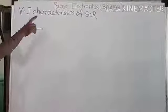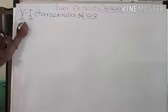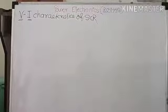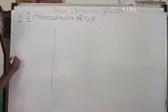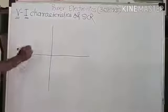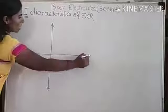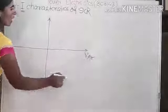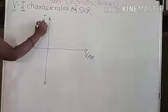SCR is nothing but Silicon Controlled Rectifier, and VI characteristics is nothing but voltage versus current characteristics. I will draw the graph for VI characteristics. On the X axis, voltage VAK (anode to cathode) is plotted, and on the Y axis, current is plotted.